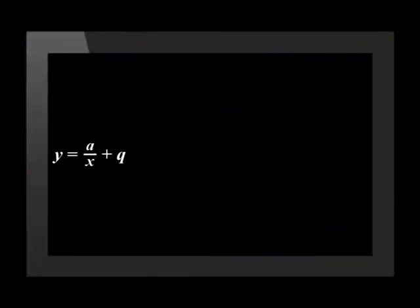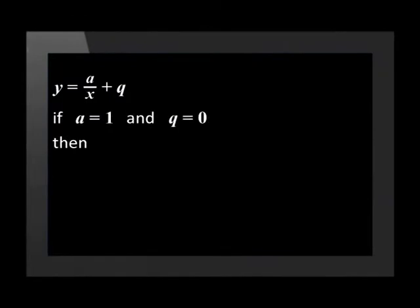The general formula of these functions is y equals a over x plus q. Remember that this means we are working with two variables, x and y. As these variables change in relation to each other, the a and q values stay the same. For a particular function, a and q are constant values. In this case, we will let a be 1 and q be 0.